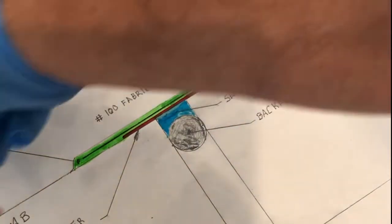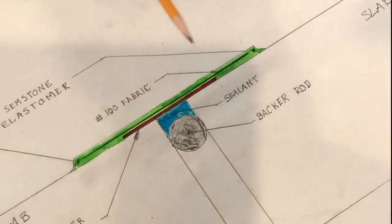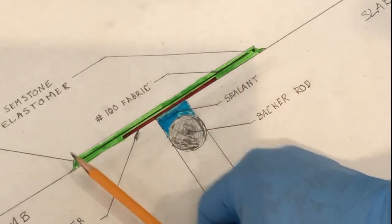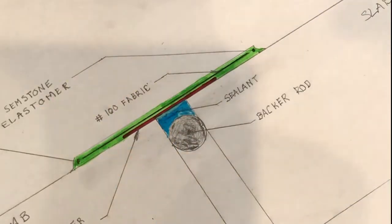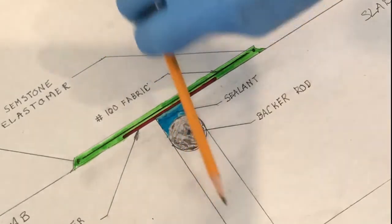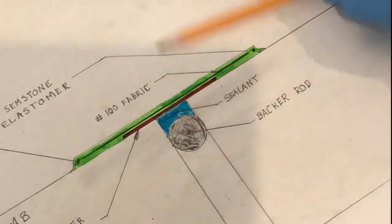Just picture this up here as a secondary containment structure. This is a joint between two slabs, and the object is to use a chemically resistant elastomer to prevent penetration of a spilled chemical into the soil below the slab through this joint.